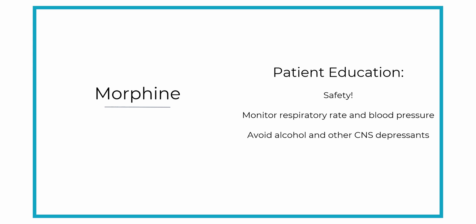Have your patient use their call light before they get up so you can assist them out of bed. If morphine is long-term, they'll need to monitor their respiratory rate and blood pressure. Advise them not to drink alcohol while taking morphine and to stay hydrated to reduce constipation and help prevent low blood pressure.